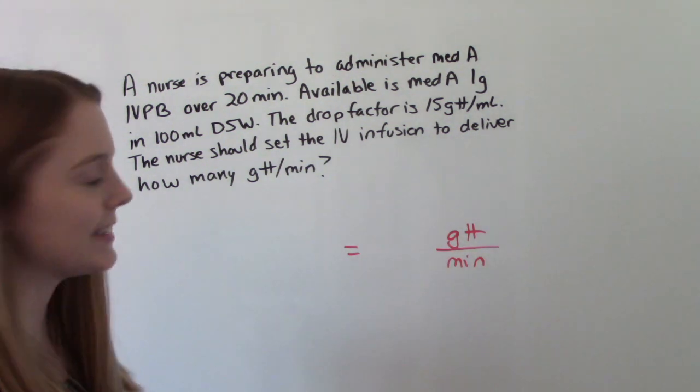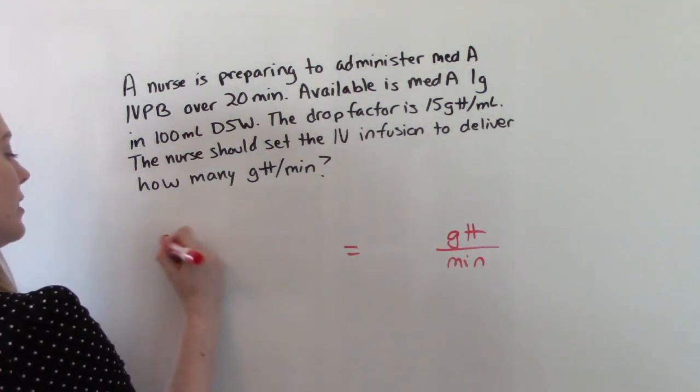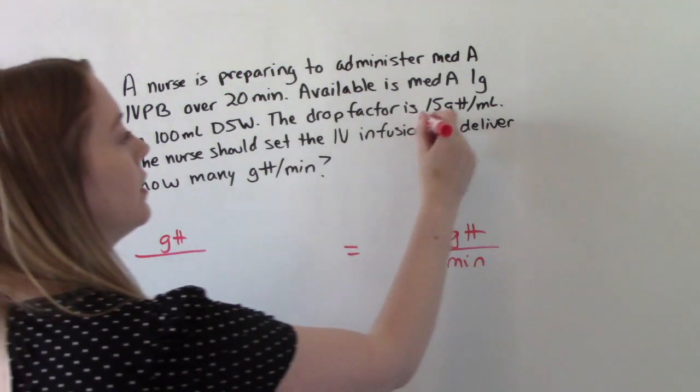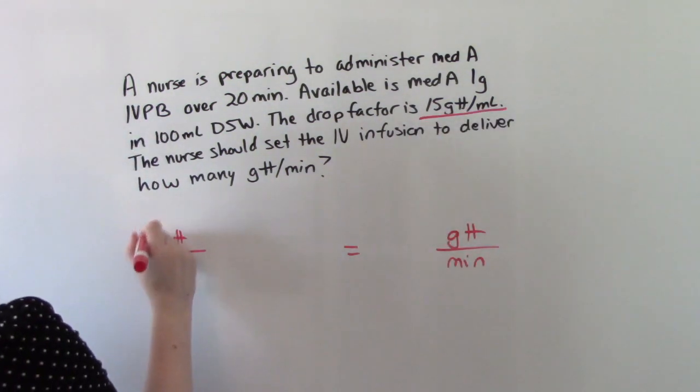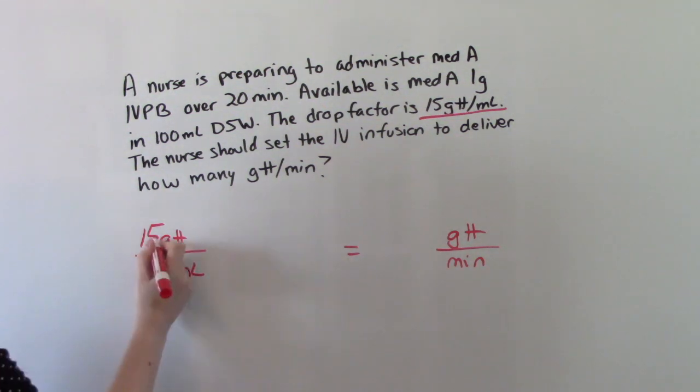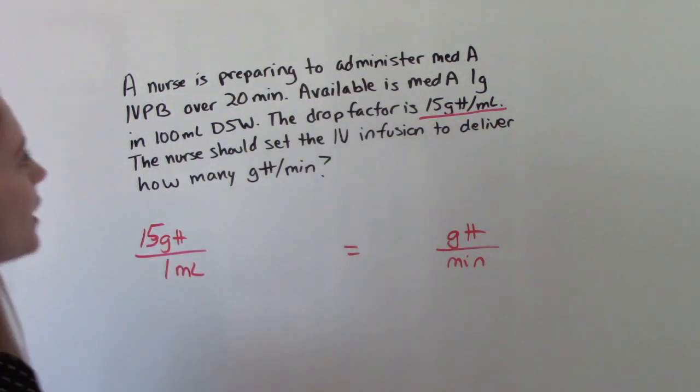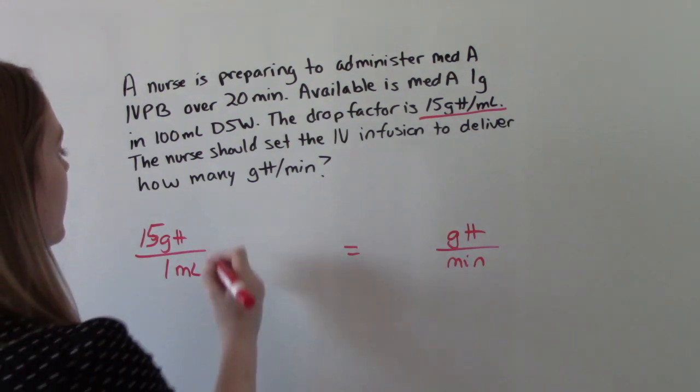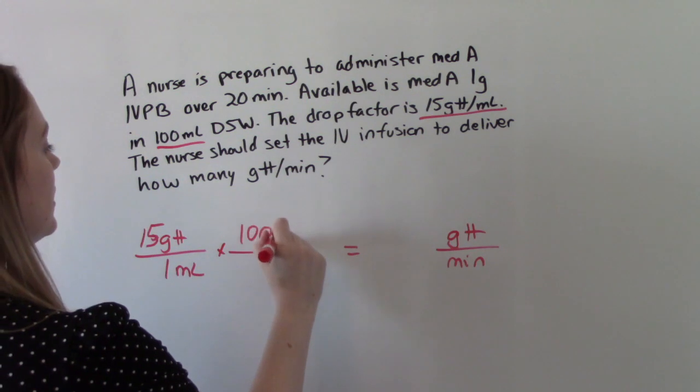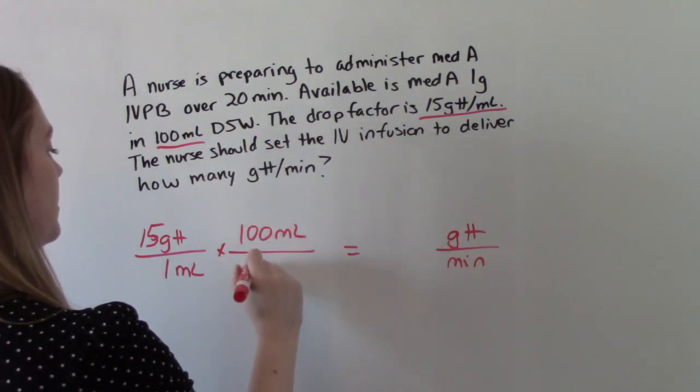And if it's in our answer, it needs to be in our numerator. So where do we see it in our problem? Right there. So 15 drops per 1 ml. And what else do we know? We know we want to do 100 ml's over 20 minutes.